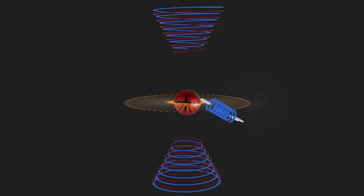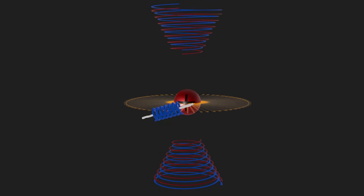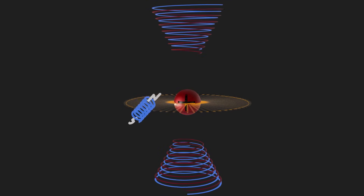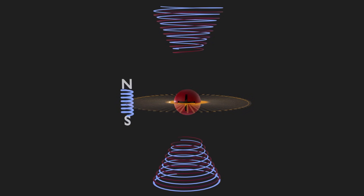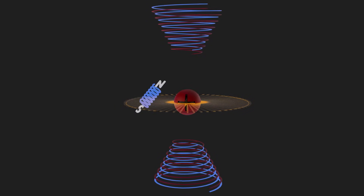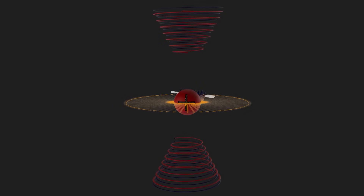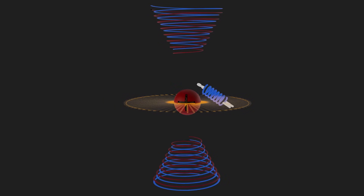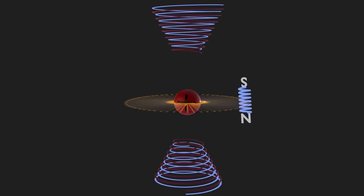The electron and proton radiate electromagnetic gravity waves. When the electron is horizontal, it is an electric particle. When it is vertical, it is a magnetic particle.